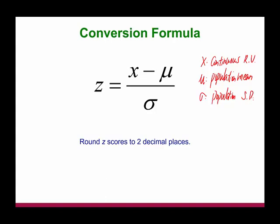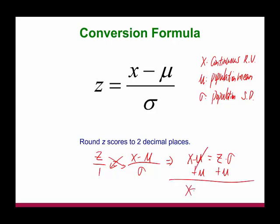Sometimes we may have to convert in the other direction. If we're given the probability and going backwards to find the x value, we use the z-score formula rearranged. Since x minus mu over sigma equals z, cross-multiplying gives x minus mu equals z times sigma. Adding mu to both sides, we get x equals mu plus z times sigma. So if you're given the probability, you can go backwards to find the value for that particular continuous random variable. Also, round the z-score to two decimal places.